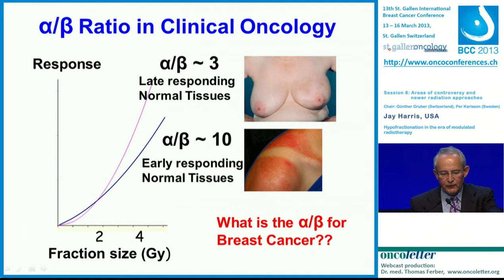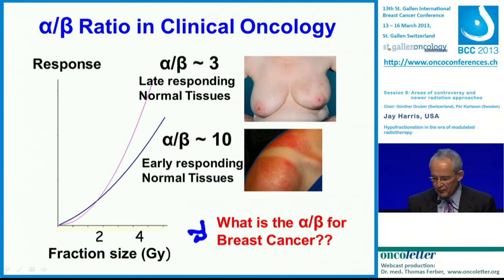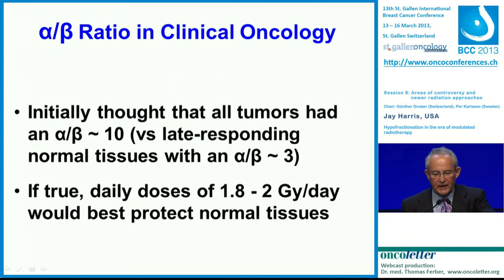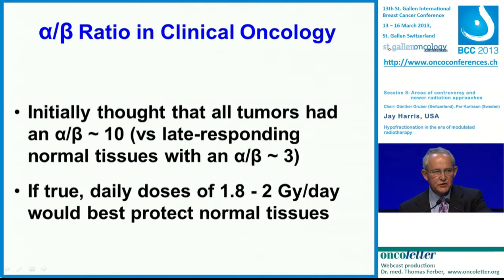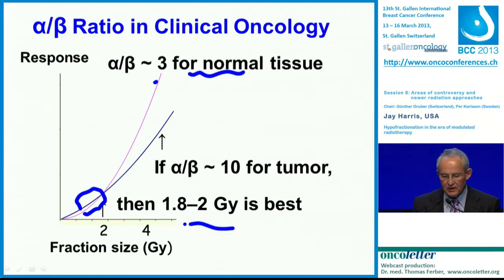We know from multiple studies that late-responding normal tissues, which is what we most care about in radiotherapy — for example, fibrosis in the breast — have an alpha-beta ratio of 3. Early-responding normal tissues, like the skin, have an alpha-beta ratio of 10. The real question is, what is the alpha-beta ratio for breast cancer? Initially, we thought that all cancers had an alpha-beta ratio of 10, compared to late-responding normal tissues where the alpha-beta ratio is 3. If this is true, then daily doses in the range of 2 gray would best protect normal tissues. So if the alpha-beta ratio for normal tissue is 3 and for tumor is 10, you actually get more effect on the cancer than on normal tissue, and 2 gray per day would be best.